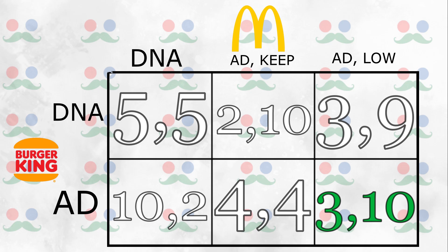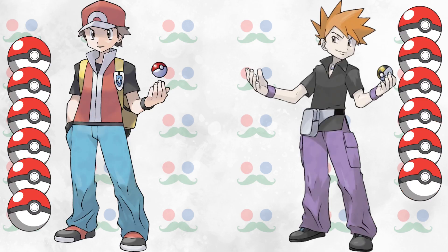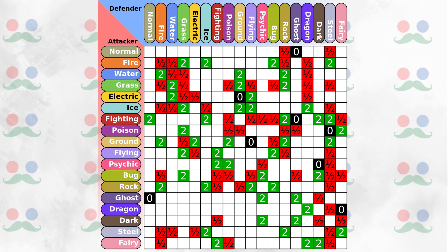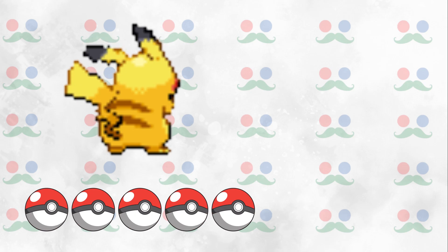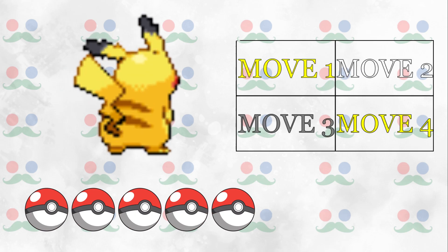Now that we have a basic game theory example under our belts, let's switch to Pokemon. For those who don't know, Pokemon is a game where you and your opponent both have six monsters, each with up to two types and four moves. The types interact in a variety of ways — I'll put the type chart on screen for anyone interested. What we're interested in is the total number of Pokemon in our party and the number of moves we can choose — in total, this makes for nine different options.